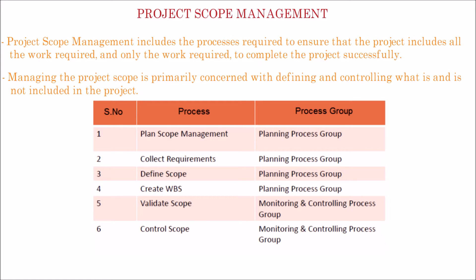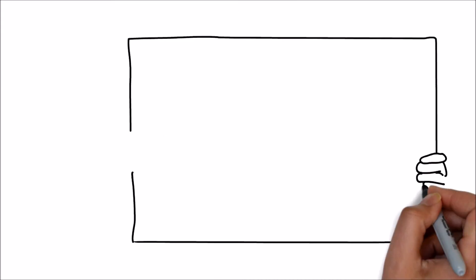Fifth is Validate Scope, the process of formalizing acceptance of the completed project deliverables. Last is Control Scope, the process of monitoring the status of the project and product scope and managing changes to the scope.